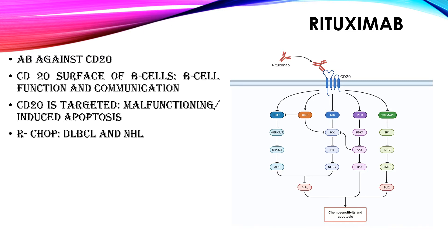Rituximab in combination with CHOP is used for diffuse large B-cell lymphoma and other subtypes of non-Hodgkin lymphoma. Due to its anti-CD20 effect, rituximab has also been used in autoimmune diseases such as rheumatoid arthritis and idiopathic thrombocytopenic purpura.